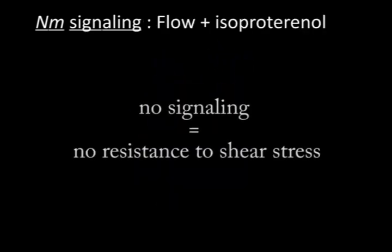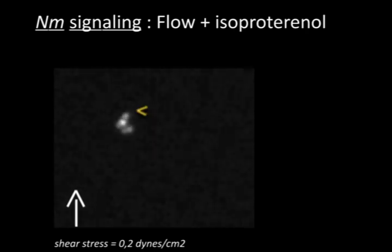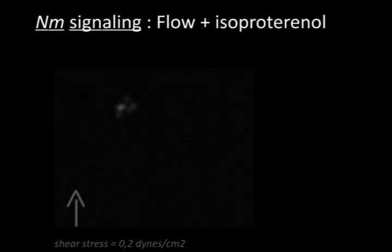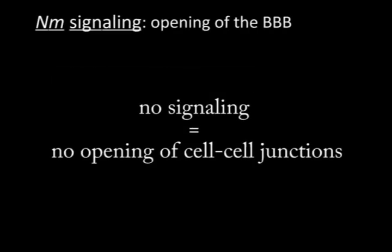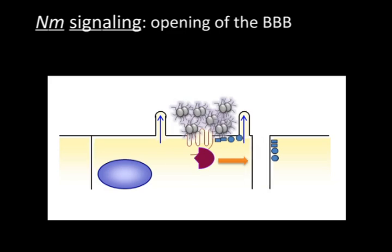Inhibition of this pathway will inhibit the resistance of bacterial colonies to stress forces under flow conditions, as we can see in this video. Lack of signalling will lead to a failure of cell-to-cell junction opening. Beta-arrestin is also involved in the delocalisation of junctional proteins under the colony, depleting them from the junction, which eventually leads to junctional opening and bacterial crossing of the brain endothelium.